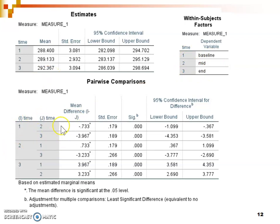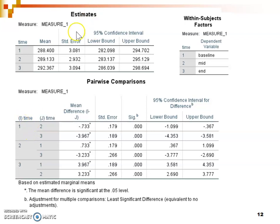In the pairwise comparisons box, SPSS uses numbers rather than labels like baseline, midpoint, and end. If you're working with your own data and it's not obvious what time one, two, and three correspond to, this is where you'll find the coding information — which is really useful for interpreting the comparisons correctly. You'll also want to find the descriptive statistics or estimates box that reports the mean for each time point, which is important when writing up your results.